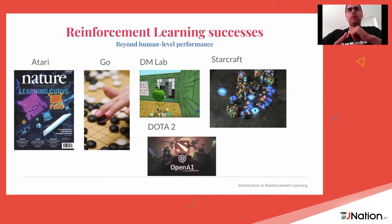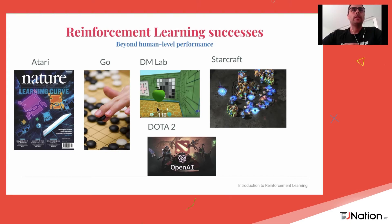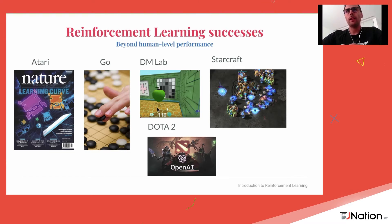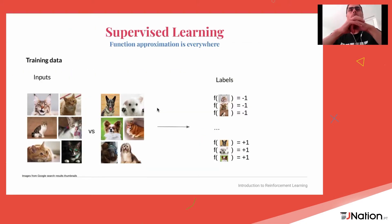You've probably heard about reinforcement learning due to a wave of recent successes in the last five or six years, mostly applied to games. So the game of Atari — a console with 57 different games — the game of Go, which is a board strategy game, and other games that became quite popular, like StarCraft, Dota, and so on. Given that I'm not assuming you have a background in reinforcement learning, I want to start by contrasting it to other problems of machine learning you are more used to, like supervised learning.